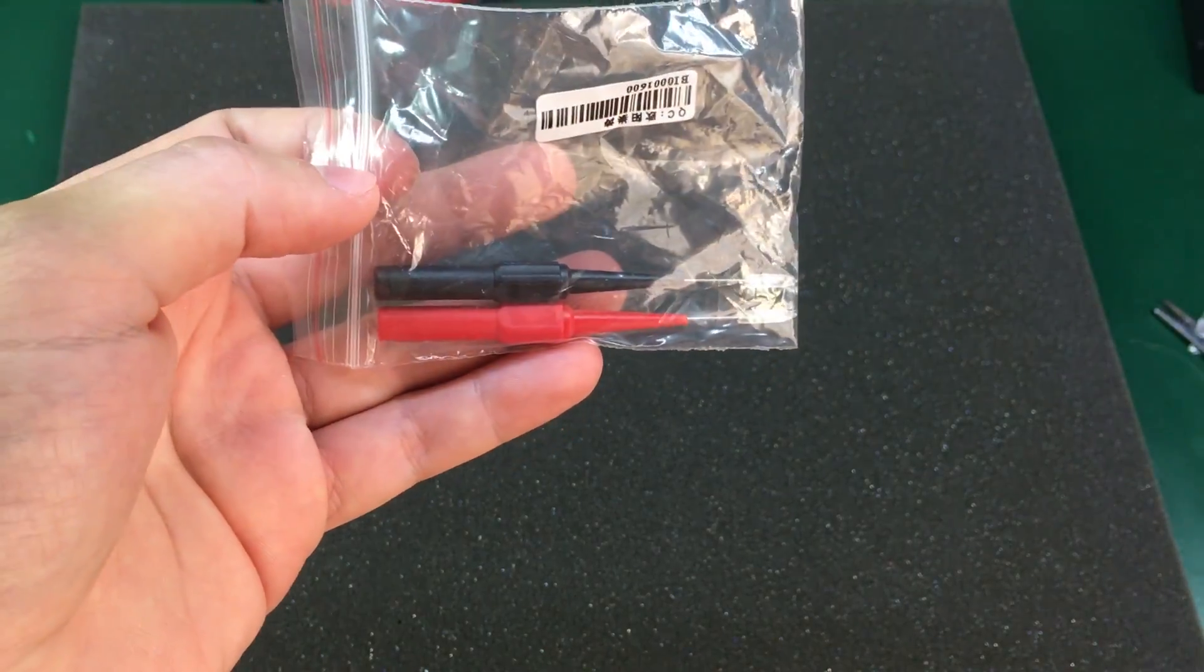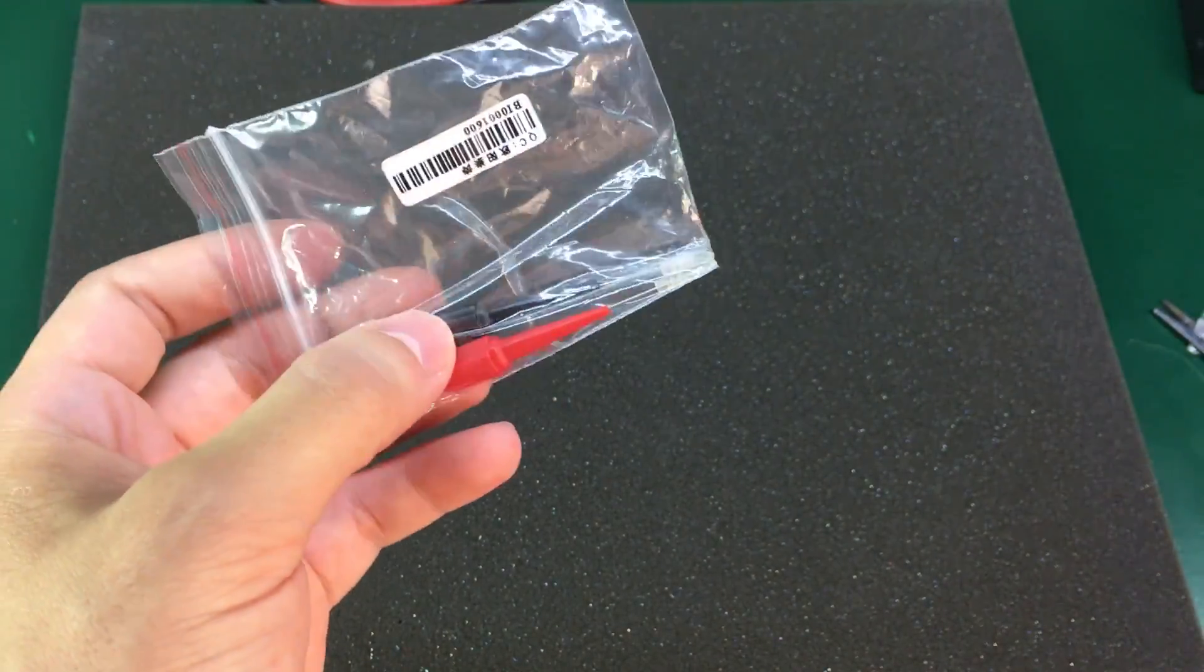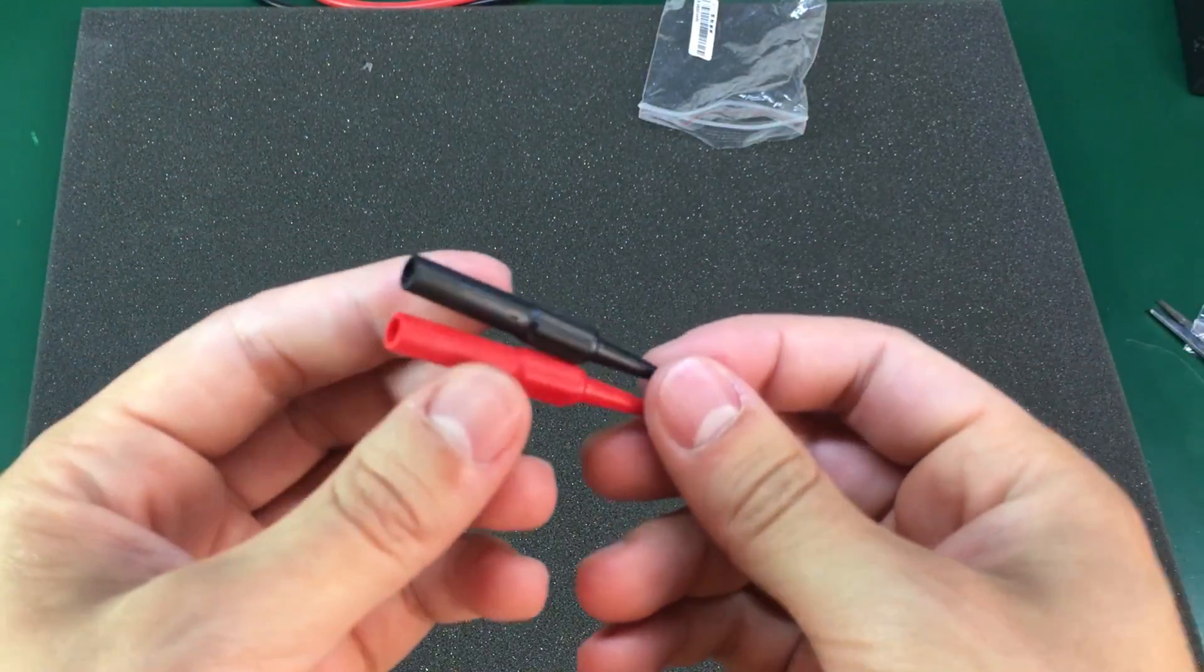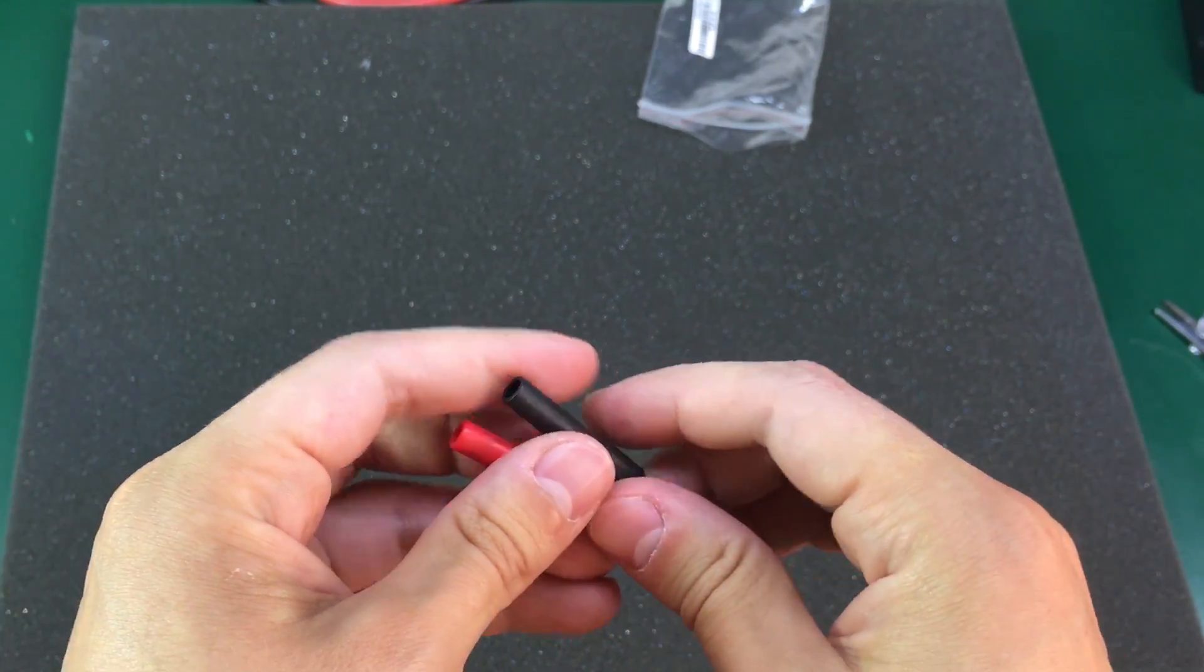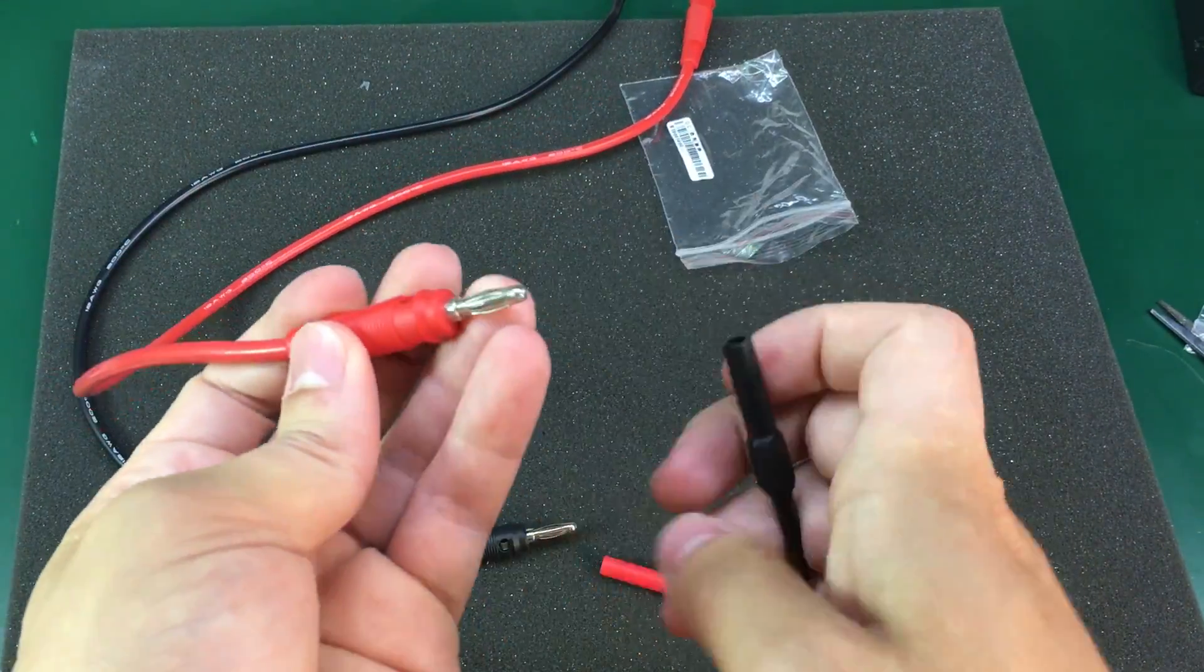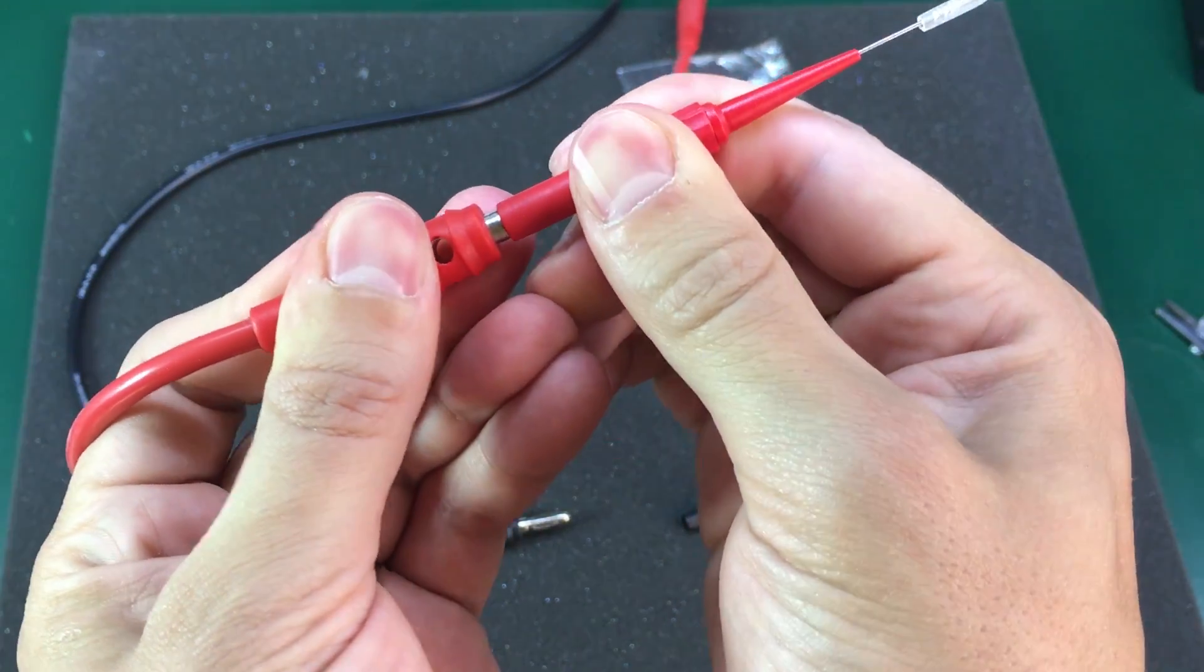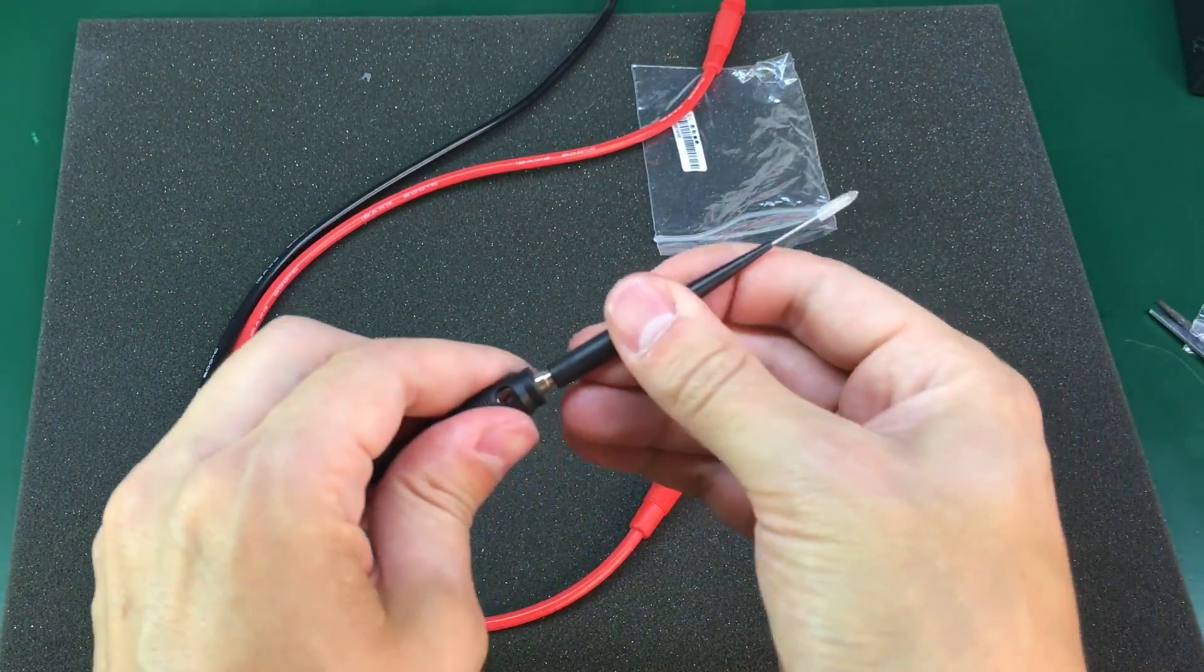You might have noticed that this mail bag is all about cables and connectors. So continuing on the same note I also got these sharp piercing test probes. I think these are supposed to accept 4mm banana plugs. And in fact let's test that. I have a pair of cables that I made. And yeah I think this is the way they are supposed to be connected.